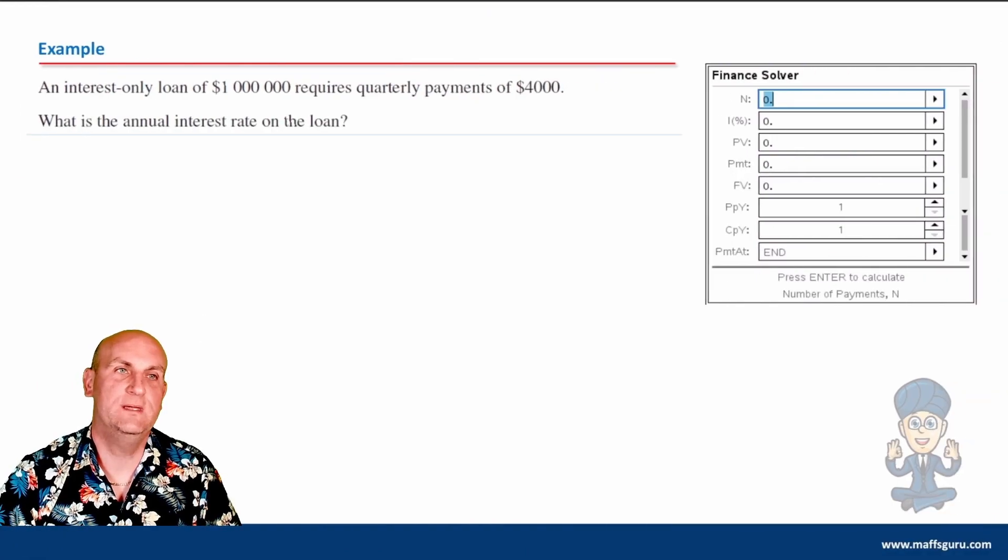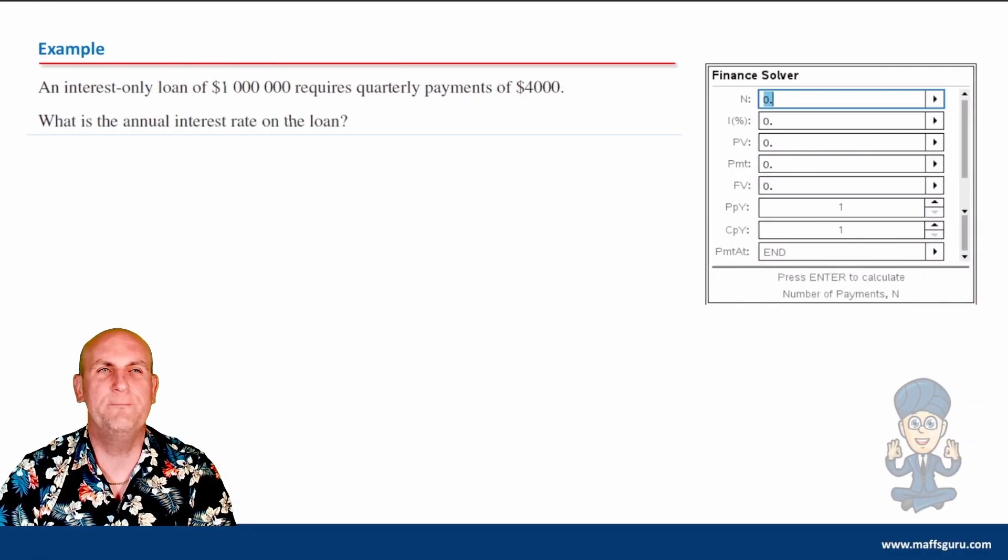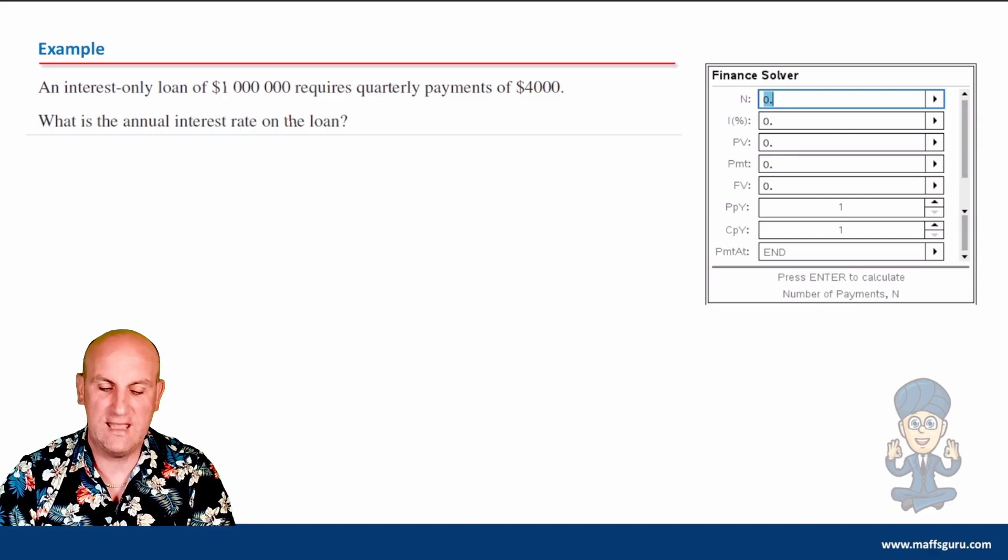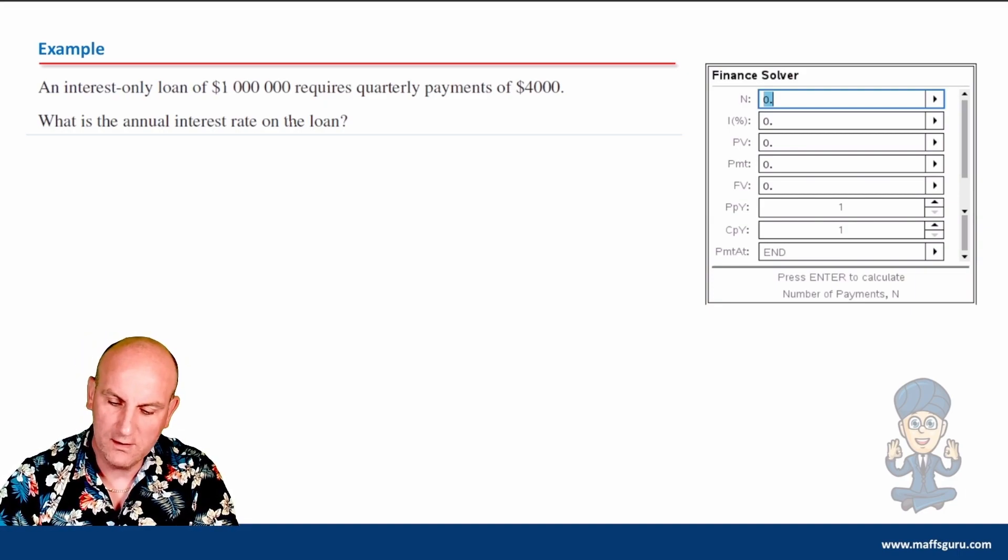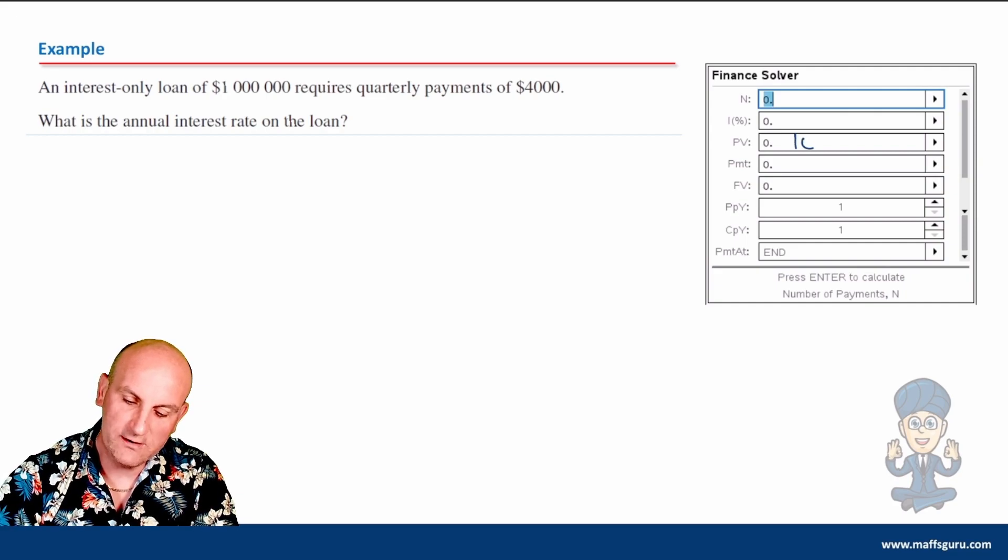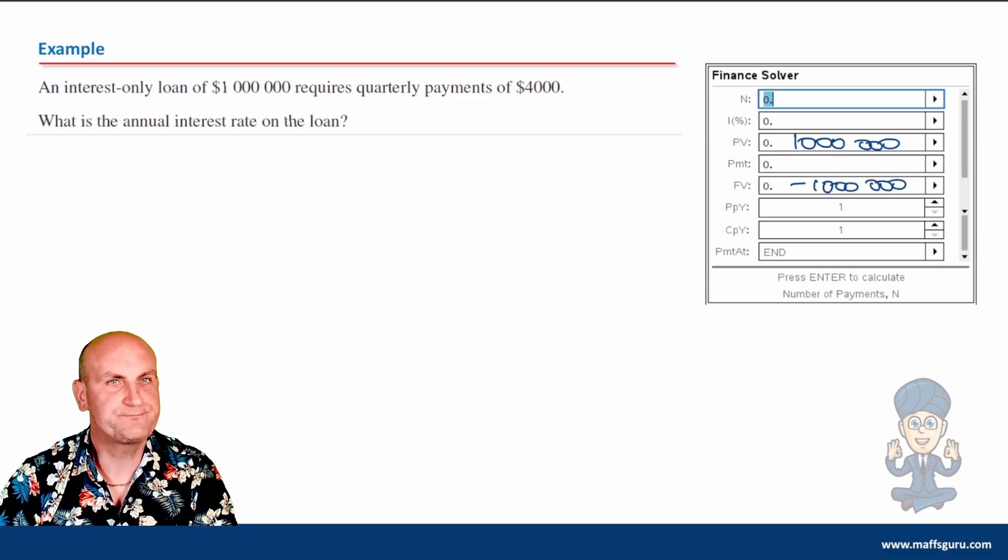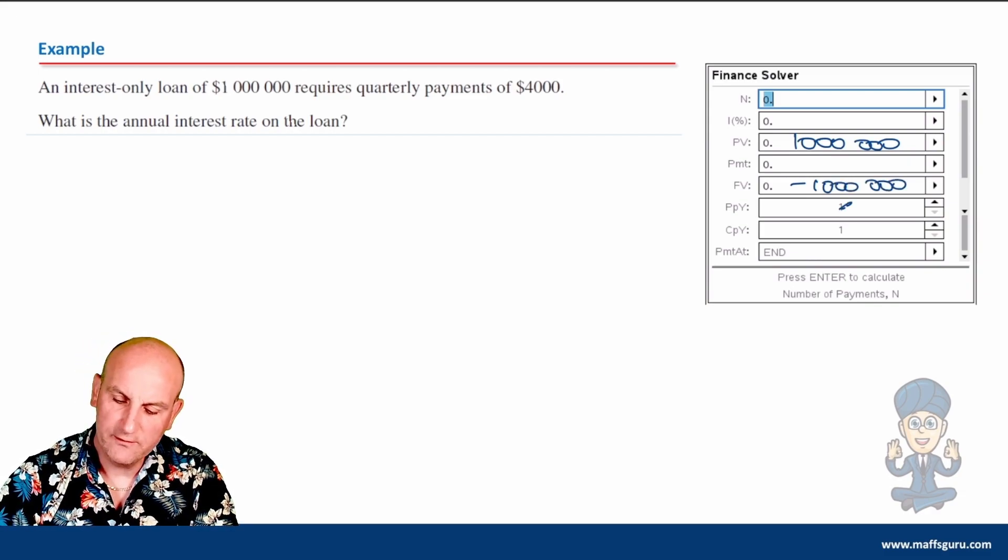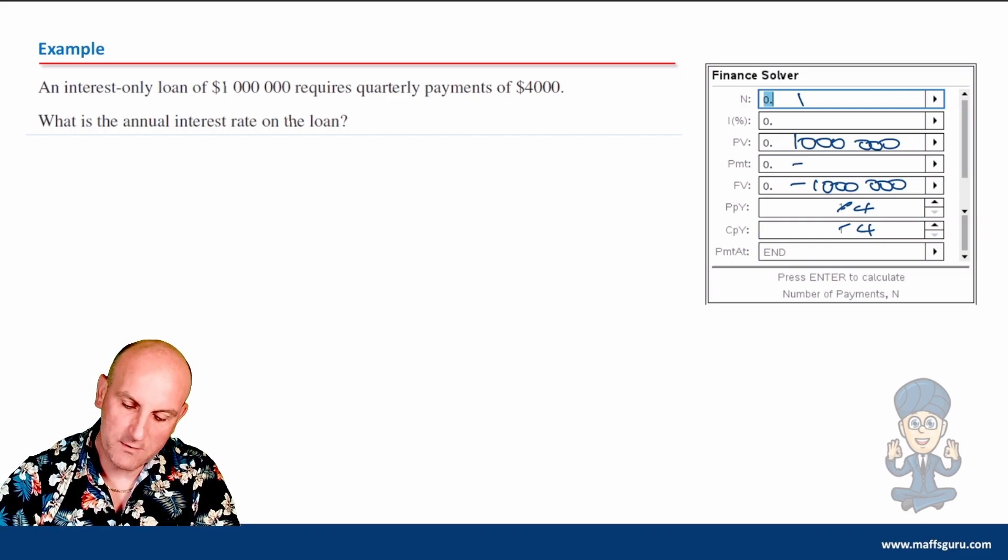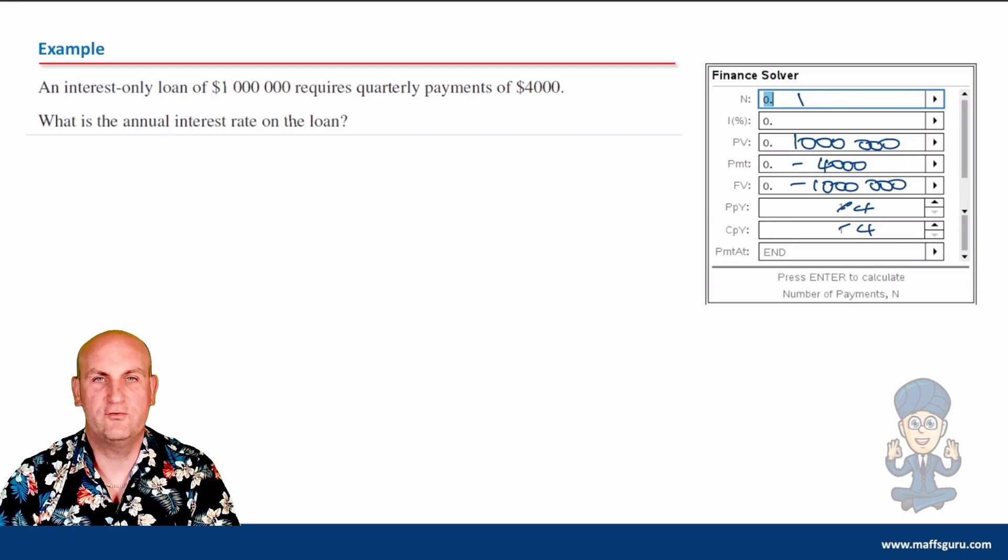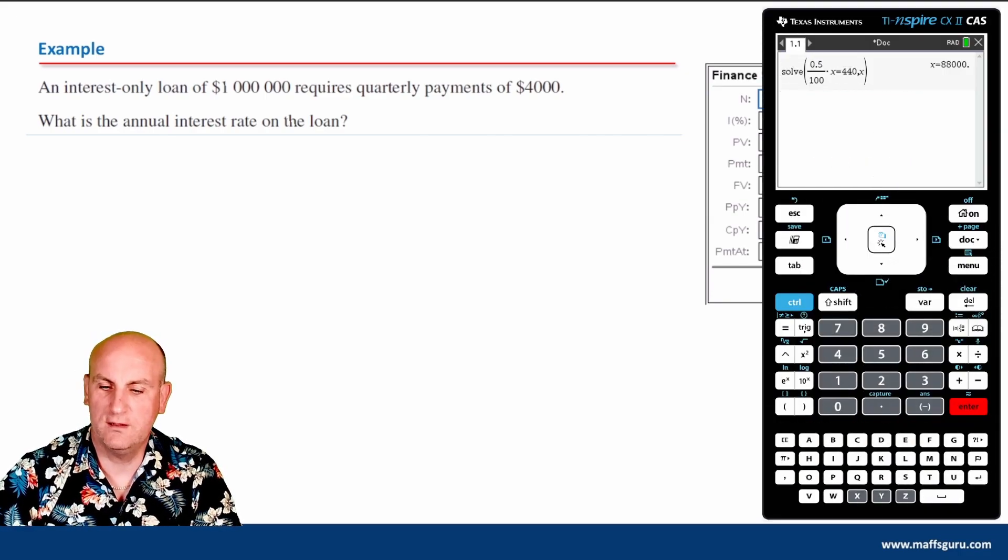An interest-only loan of $1 million requires quarterly payments of $4,000. Do we have everything we need? Let's try and fill it in. It's a loan, so my principal value is $1 million, which means my future value is minus $1 million. It's quarterly, so those are going to be 4 and 4. N is 1 because it doesn't matter how many payments I make. My payment is minus $4,000.